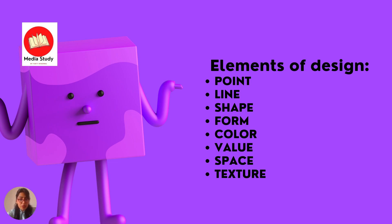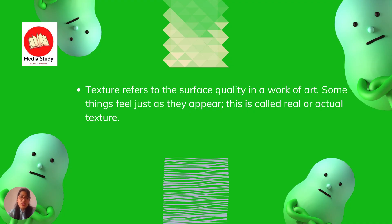The last element we have is texture. Texture is very important in design — it talks about the surface quality in your work of art. What type of surface is it having? Is it real or is it showing us the actual texture? When we are using digital images, you might come across a texture which appears very rough. It gives us an appearance that it is real or we can perceive it as a textured surface. So when we're talking about surface quality, we are using texture in our design.